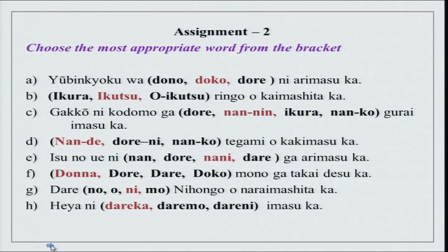Choose the most appropriate word from the bracket. Yubinkyoku wa doko ni arimasu ka? You have wa and ni as a pattern. Then ikutsu ringo wo kaimashita ka? Ikutsu is how many. Gakkou ni kodomo ga nannin gurai imasu ka? Because of kodomo, counter nin is used. Ikura is how much. Nanko is for things and dore is which one. Nande tegami wo kakimasu ka? By what, with the help of what. Isu no ue ni nani ga arimasu ka - what is there on the chair. Donna mono ga takai desu ka - which type of thing is expensive.